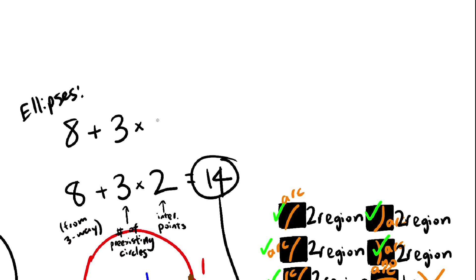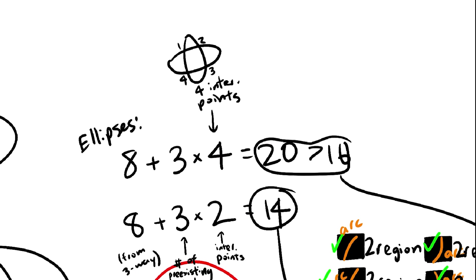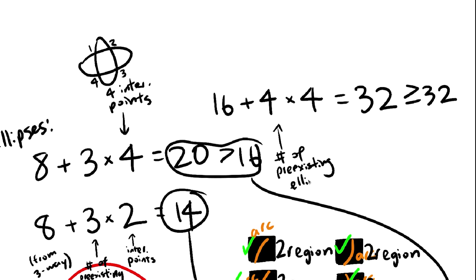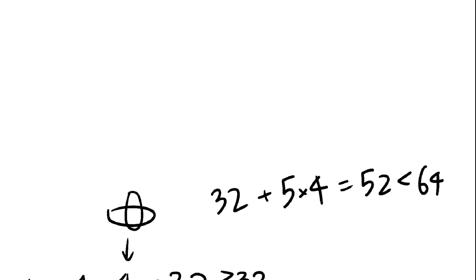But for ellipses, 4 intersections, 8 plus 3 times 4 is 20, which clears the 4-way requirement. Ellipses can also just barely form 5-way, because 16 plus 4 times 4 is 32. But 6-way isn't possible. 32 plus 5 times 4 is not even close to 64.